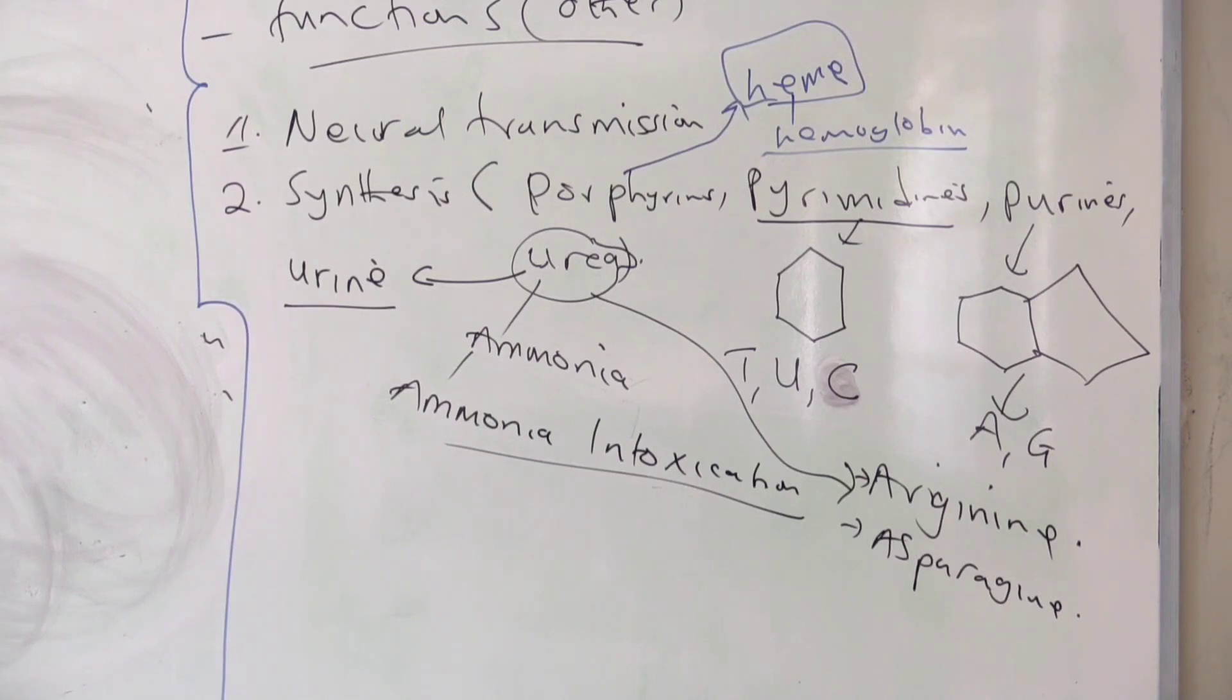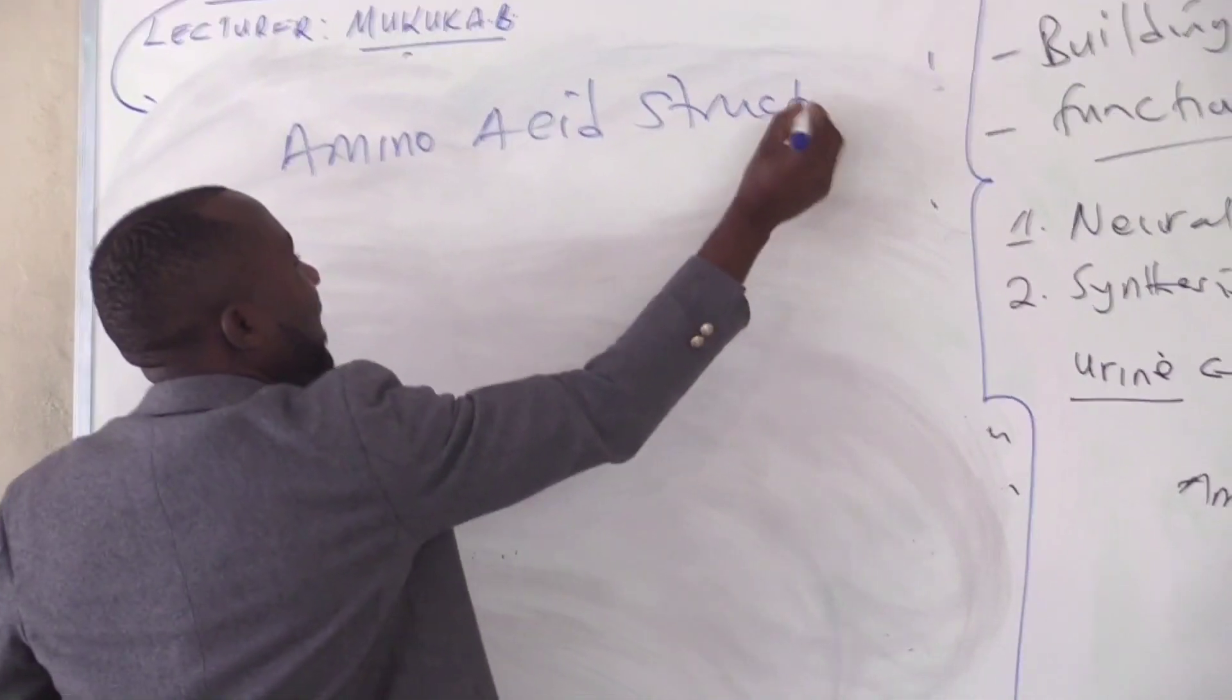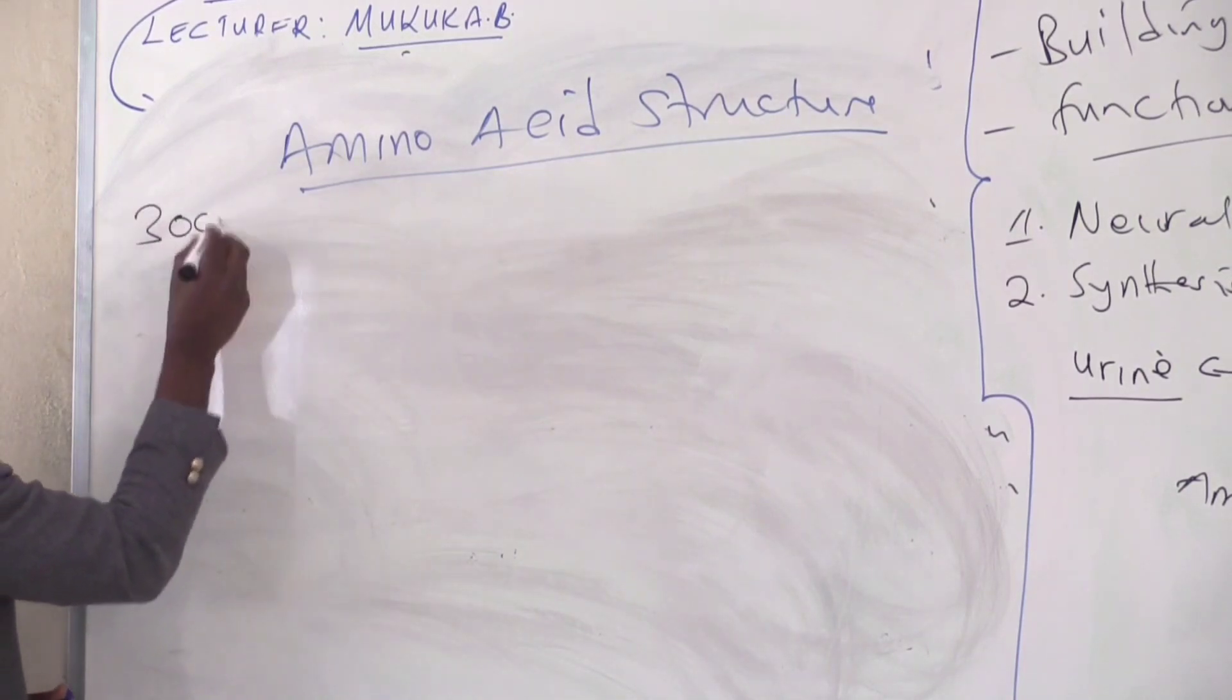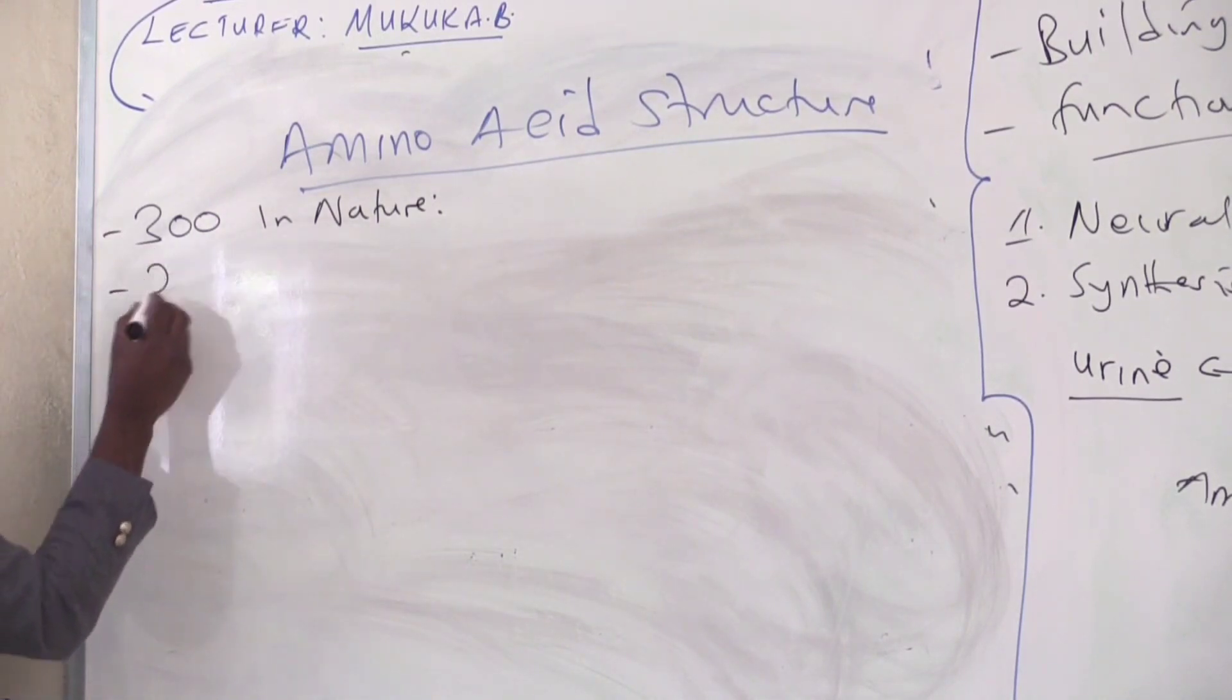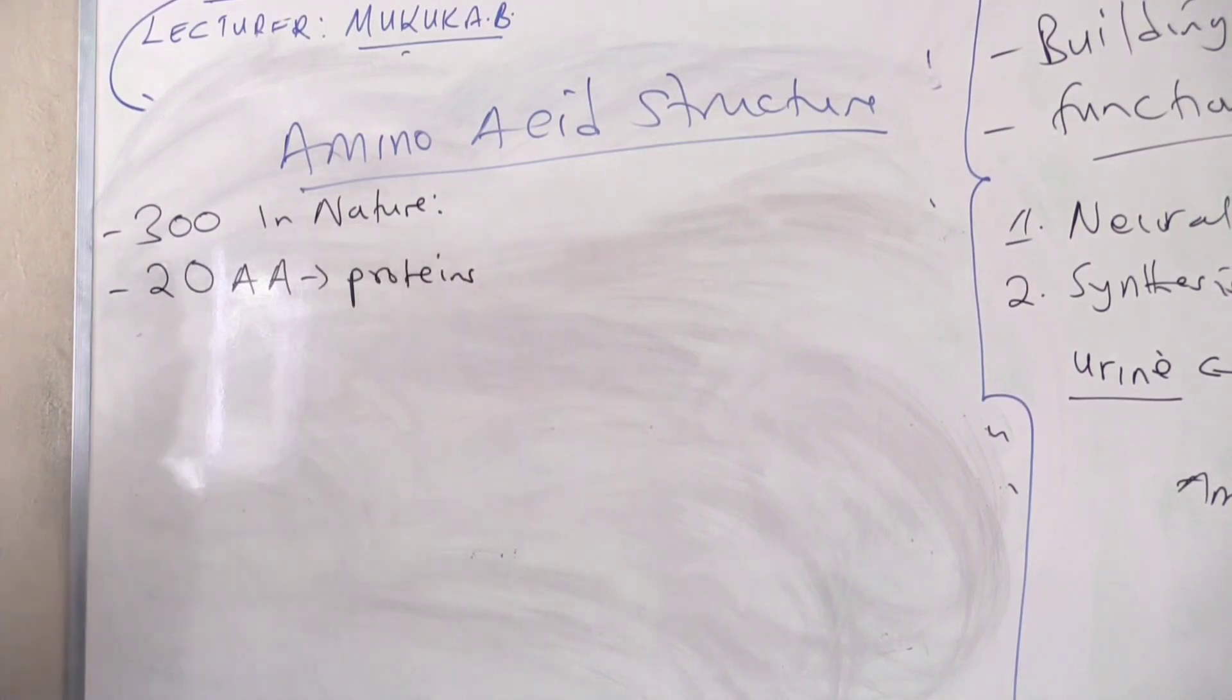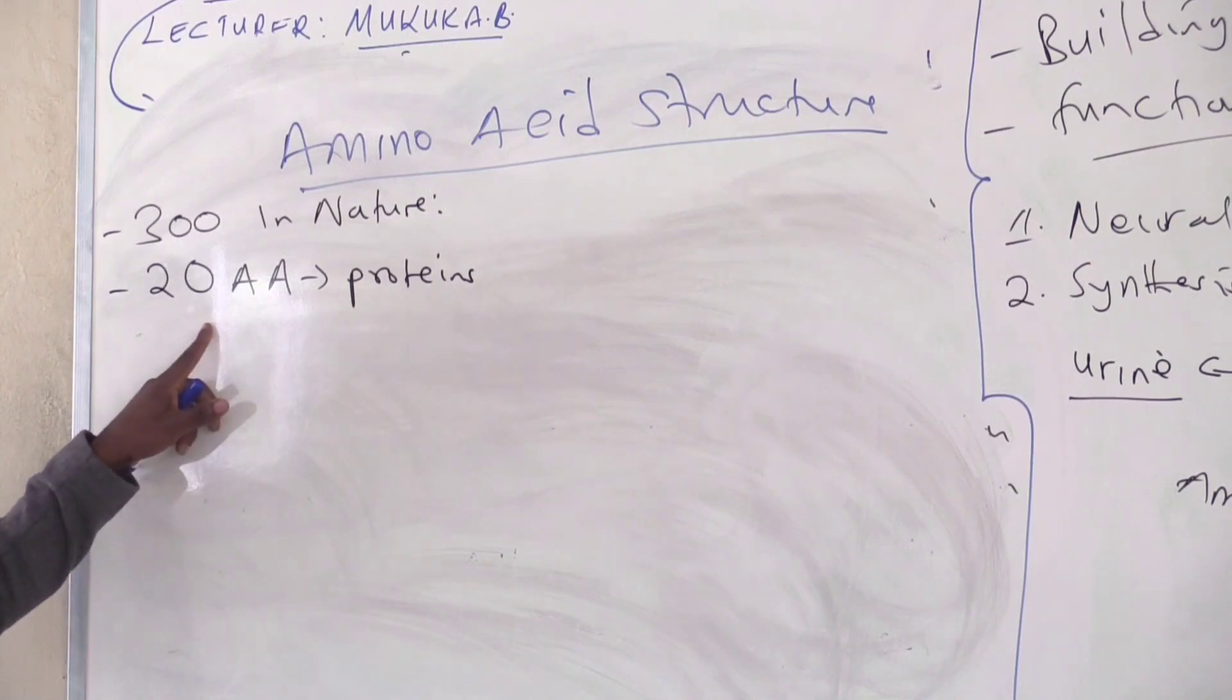What is an amino acid? Amino acids, we have about 300 amino acids in nature. Although we have 300 amino acids in nature, the human body utilizes only 20 amino acids in order to make proteins. As a medical student, it's important for you to know the 20 amino acids. If you can't master their structures, at least understand their different groups and understand their names.